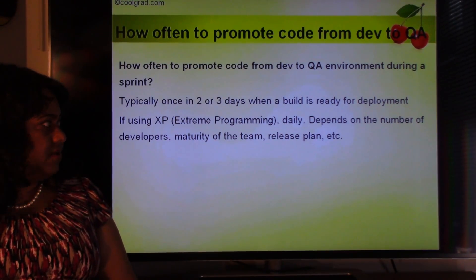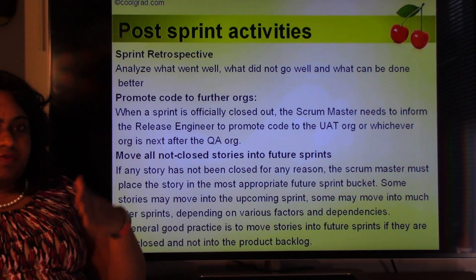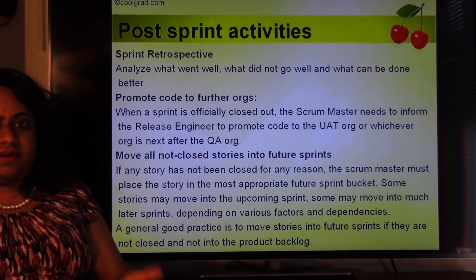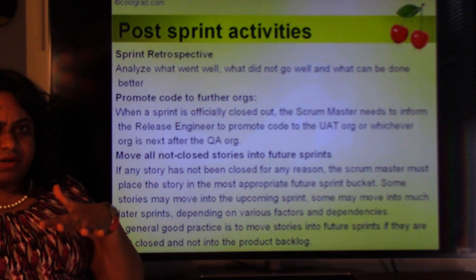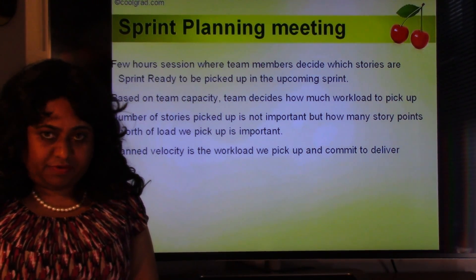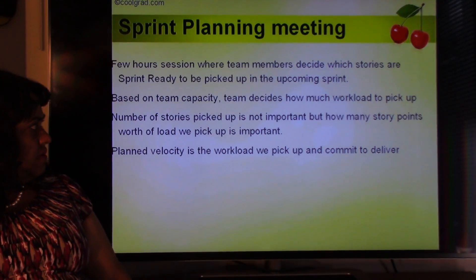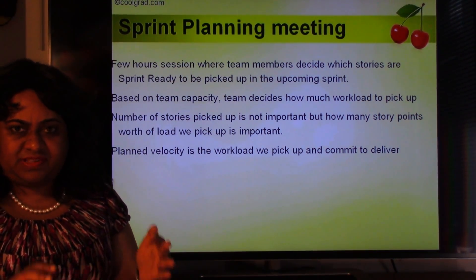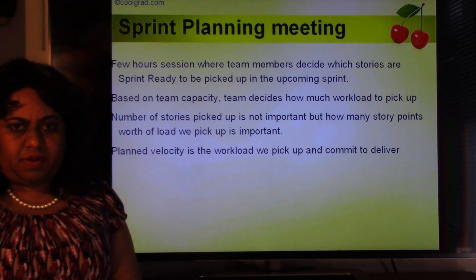Sprint exit criteria: The Scrum Master determines when a sprint is officially closed out. For a sprint to be done: the sprint demo and sprint retrospective must be completed; all test cases and test steps have been executed; the code is stable in the QA environment; defects have been logged for every failed test case and addressed appropriately; product owners have tested the functionality and are happy; sprint demo is done; sprint metrics have been published; and the retrospective is done. The code also needs to have been migrated to the specific environment where the client can test it. Then the Scrum Master says the sprint is officially closed.